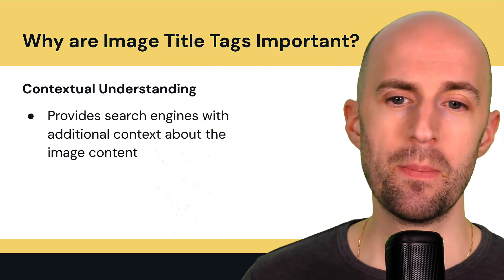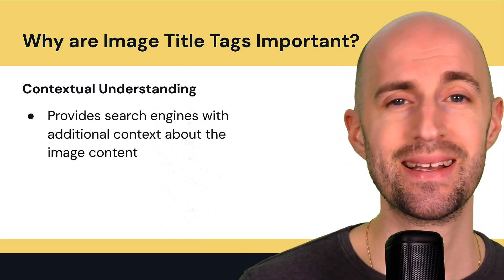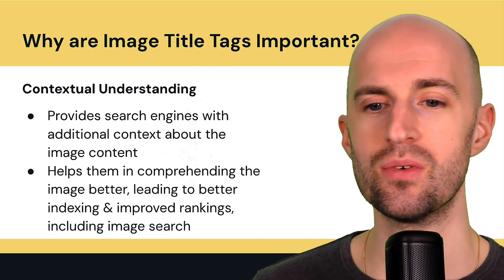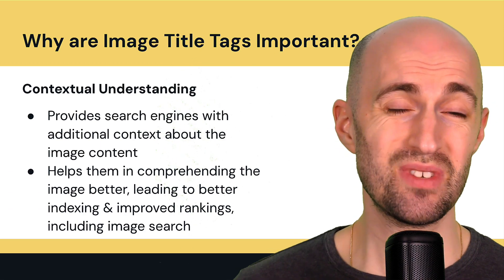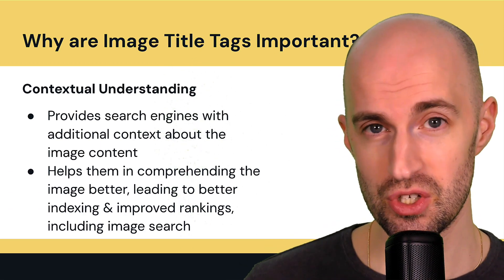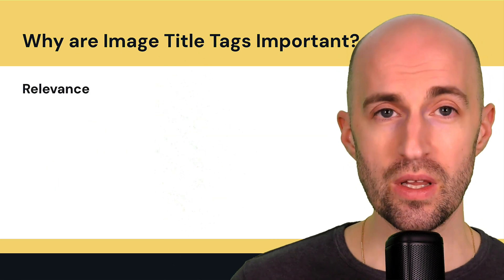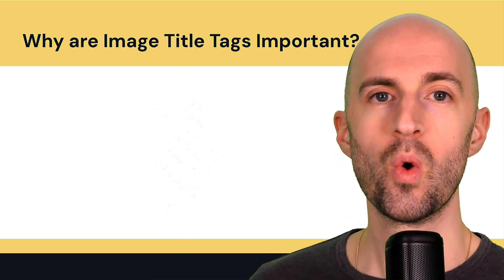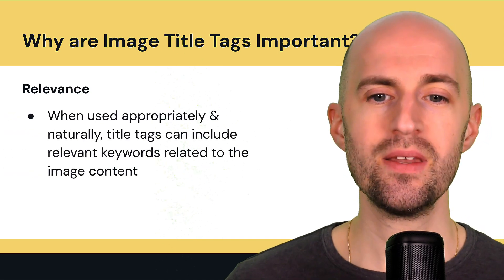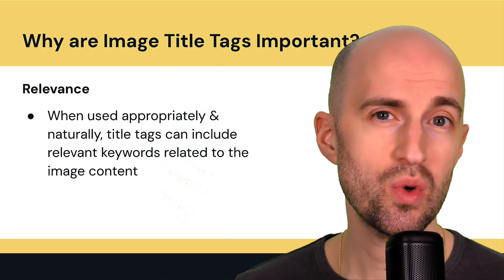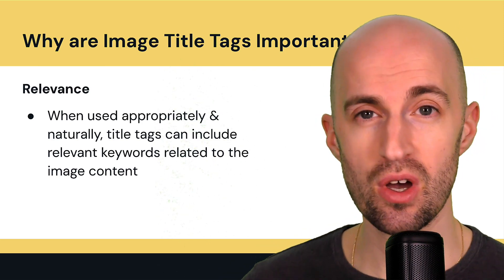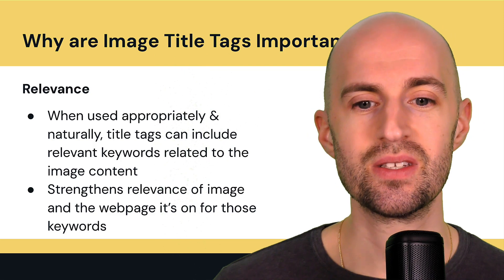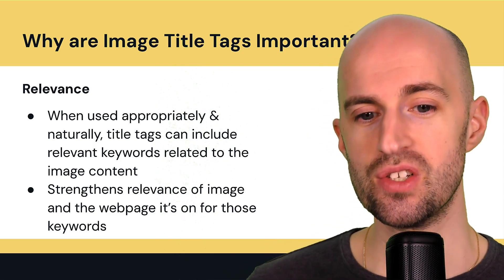Contextual understanding — it provides search engines with additional context about the image content, allowing them to understand what the image is all about, which leads to better indexing and improved rankings, including in image search. Relevance — when used appropriately and naturally, title tags on images can also include relevant keywords related to the image content or the topic that the image is embedded in on that page. This strengthens the relevance of the image and the web page for those keywords, which can lead to better rankings.